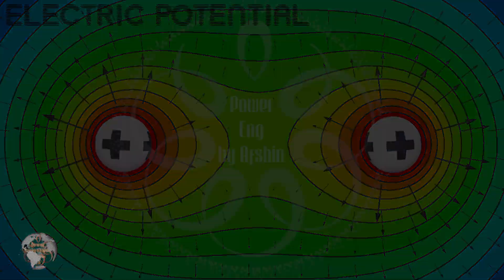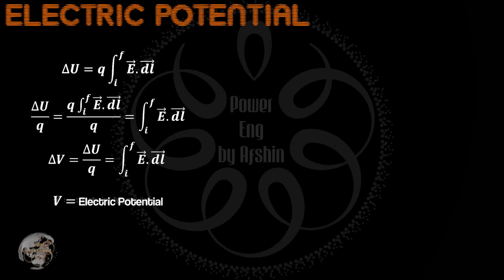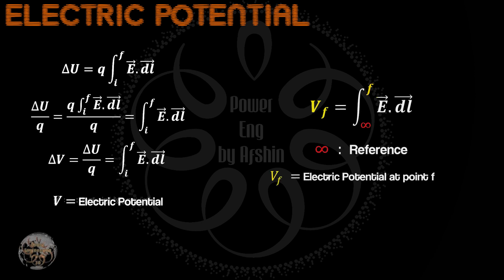When we divide the change in potential energy by the test charge, we obtain the change in electric potential, also called voltage, which is represented by V. The electric potential, at any point in space, is a scalar quantity, independent of the test charge amount, while potential energy depends on the amount of the charge.